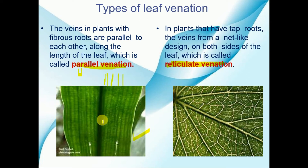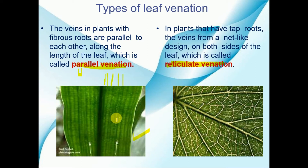We have so many examples of parallel venation, like your maize plant and your sugarcane plant — these plants have leaves with parallel venation. So when the design formed by the veins is in the form of parallel lines, such kind of venation is known as parallel venation.